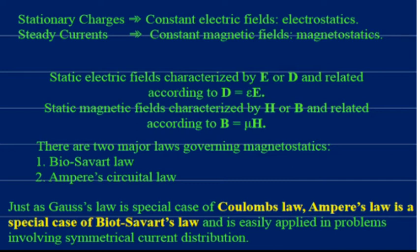As you already know, there are two types of charges: stationary charges and moving charges. In magnetostatics, we study charges that are in motion. Stationary charges produce a constant electric field useful for electrostatics, while moving charges are responsible for a constant magnetic field useful for magnetostatics. The relation between electric displacement and electric field intensity is D = εE, where ε is the permittivity.